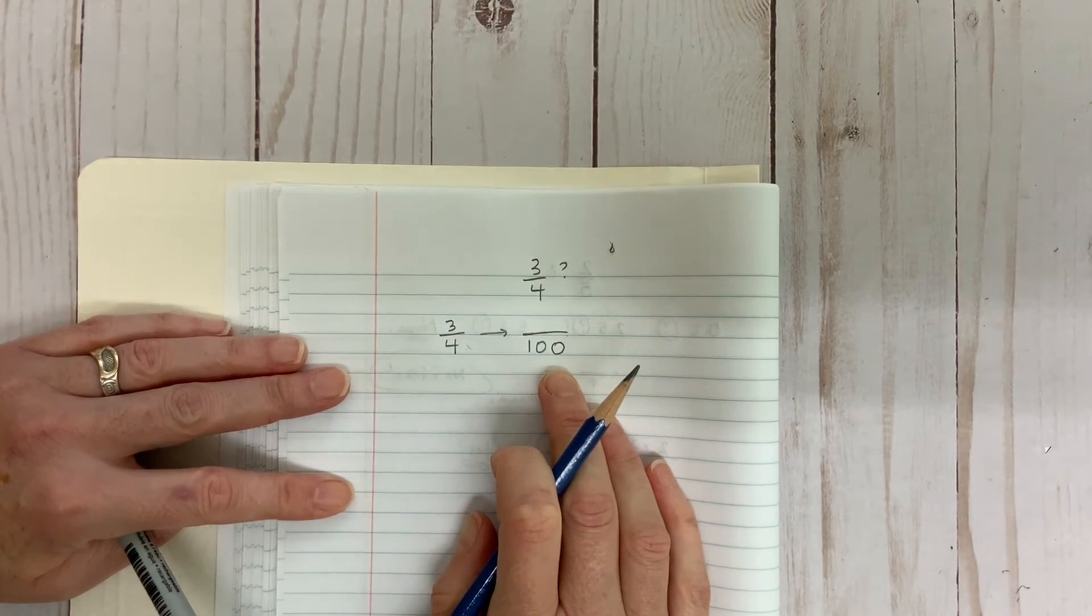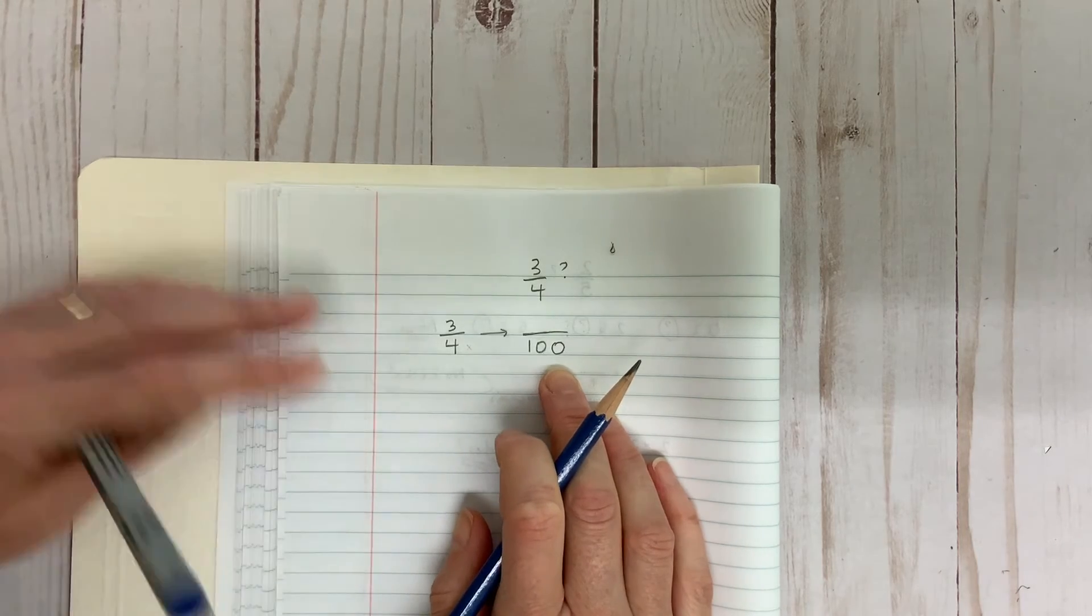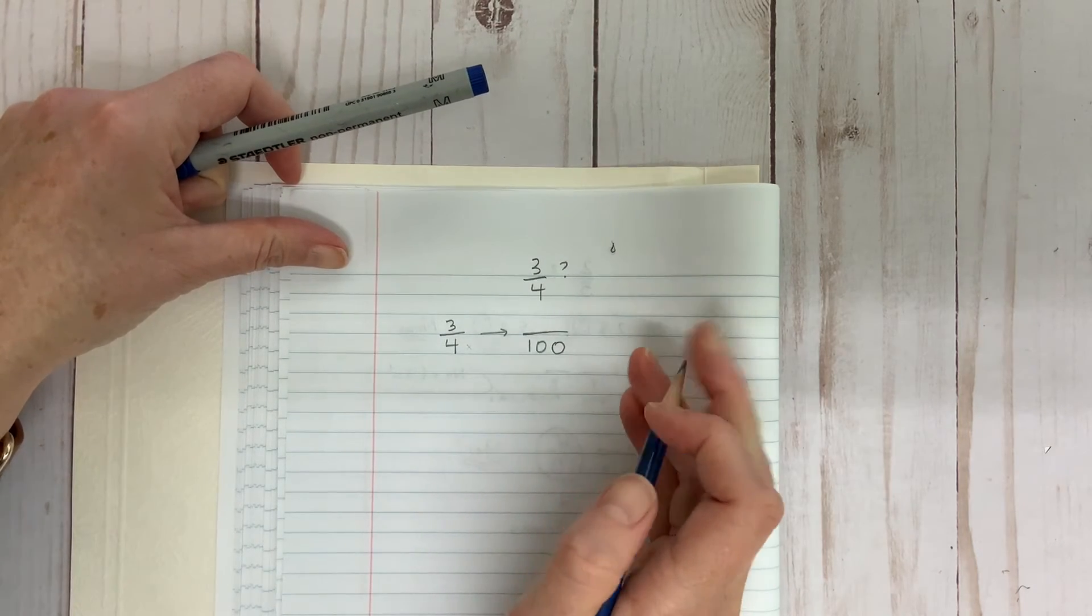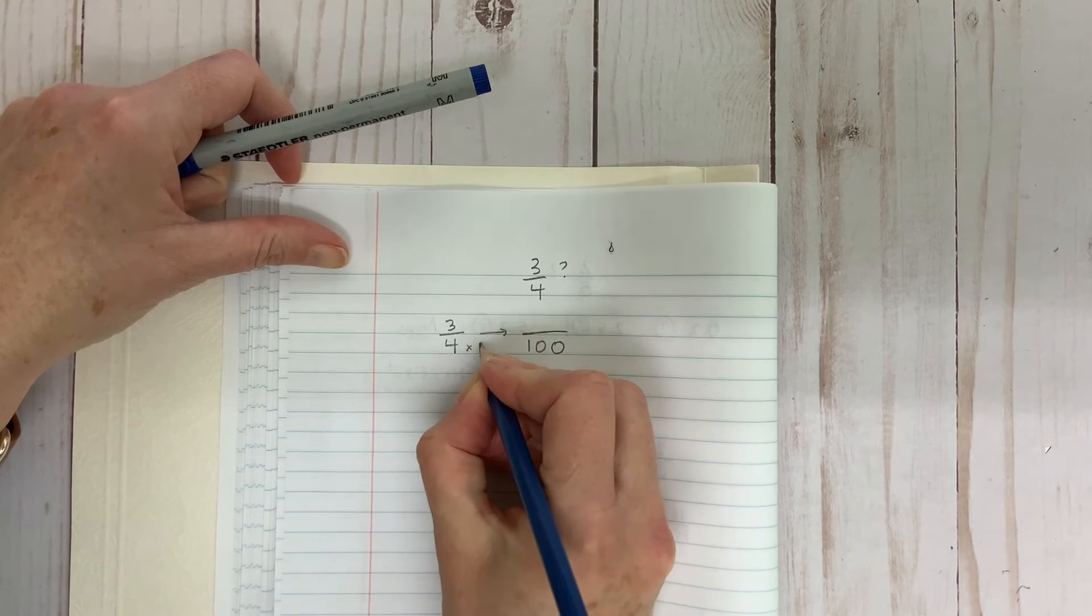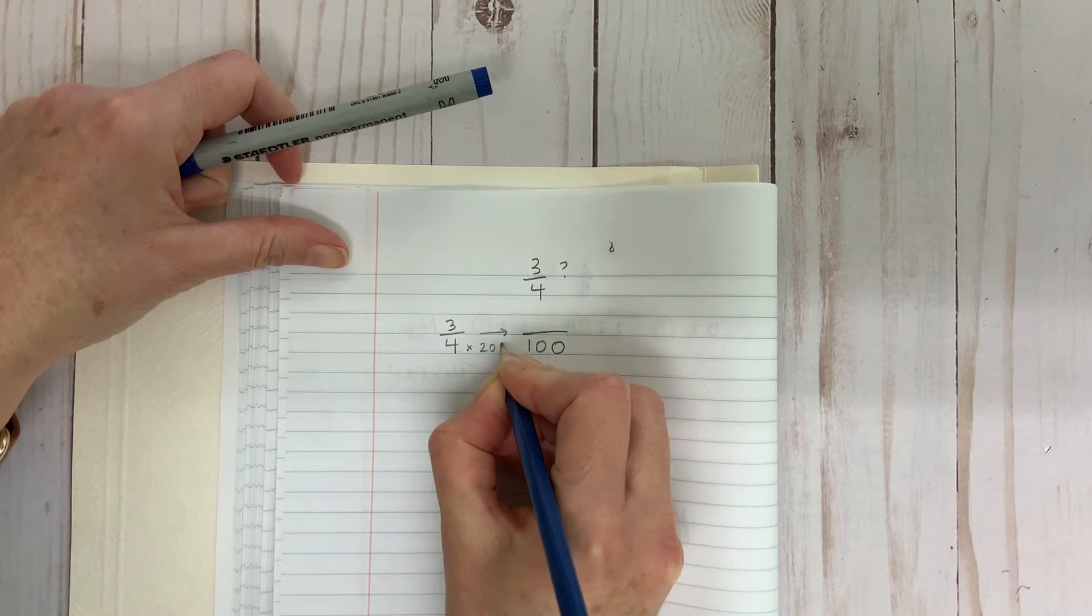I just have to be comfortable with a pattern that I've noticed. I can multiply to create an equivalent fraction. I just need to remember that whatever I do to change my denominator, I have to do the same to my numerator.